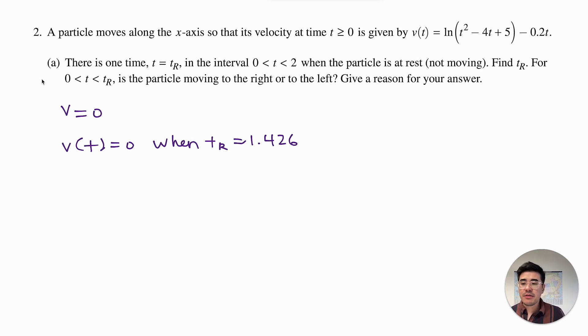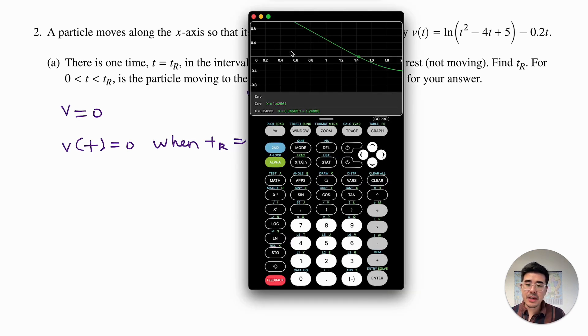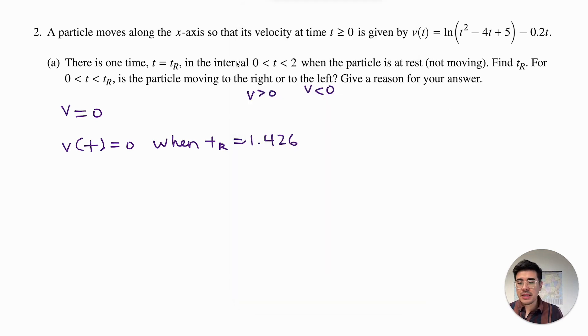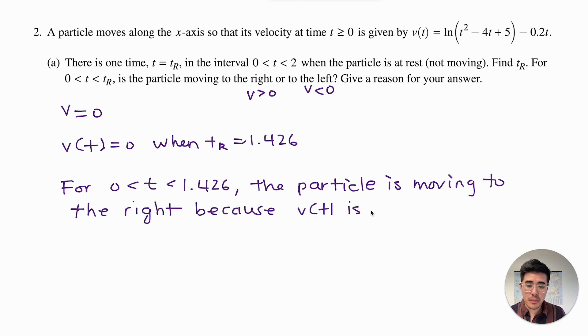And then the second part of the question says for zero is less than t is less than t_r, is the particle moving to the right or the left? Remember that when the particle is moving to the right, that's when your velocity is positive. And when your particle is moving to the left, that's where your velocity is negative. Well, if we look at our graph of our particle, it's above the x-axis. So v of t is positive on that interval. For zero is less than t is less than 1.426, the particle is moving to the right because v of t is positive on that interval. So here you get full credit if you mention in a full complete sentence that v of t is positive on the interval that you found.